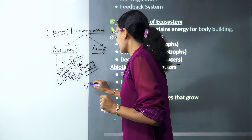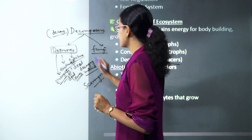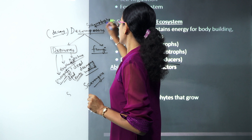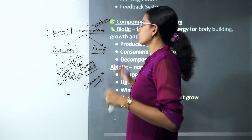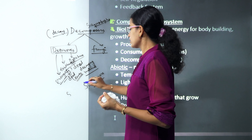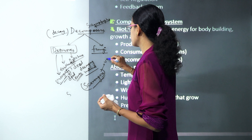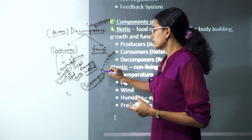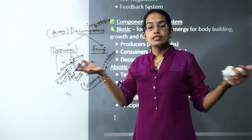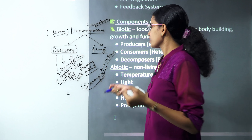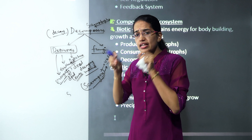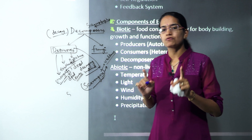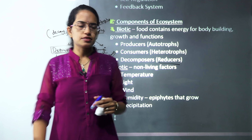Detritivores and scavengers are two separate terms. A classic example of a scavenger is vulture, which feeds on dead organisms — they consume a large quantity of organic matter. After the scavenger's consumption, what is left is consumed by detritivores. The difference between scavengers and detritivores is very very important to remember.